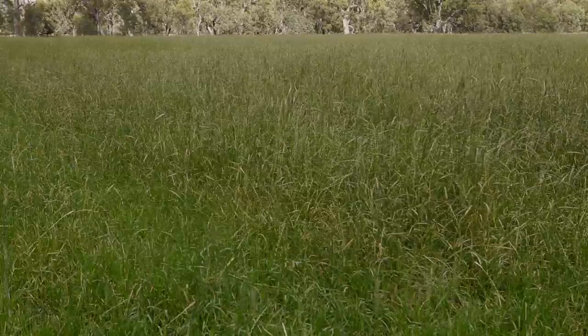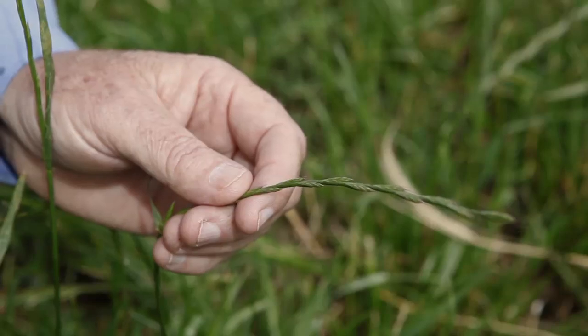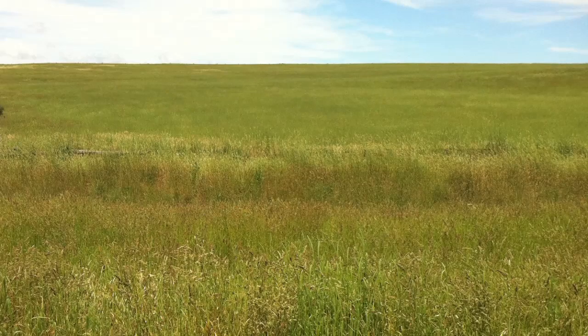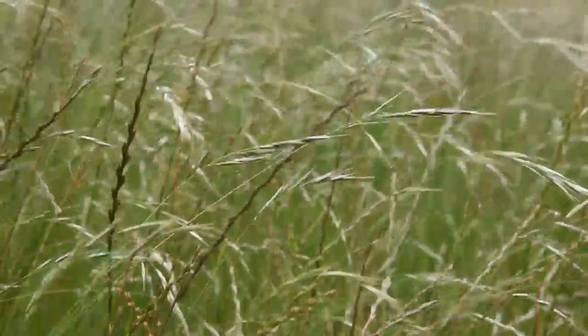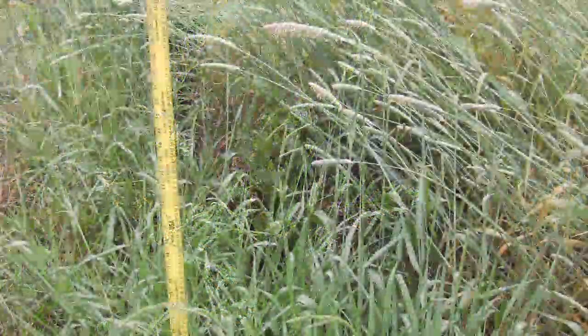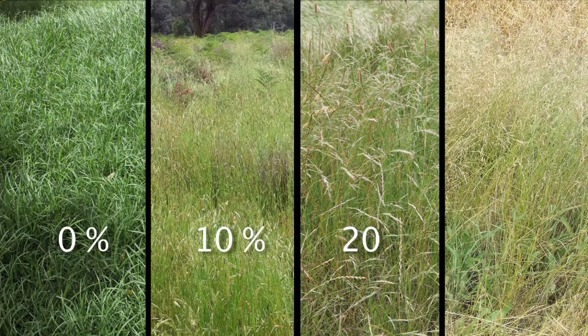How do we identify grass at ten and twenty percent cured? Here is rye grass at about ten percent — the grass is basically green and the seed heads are developed. Twenty percent cured is where the seed heads are maturing and opening; usually at twenty percent there is very little yellow in the grass. Here are some photos of grasslands at zero, ten, twenty and thirty percent cured.